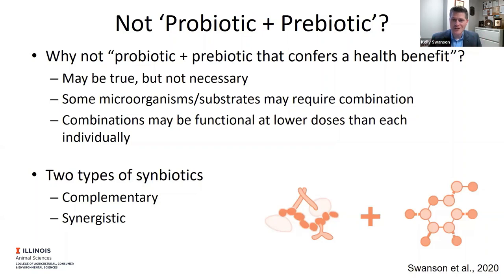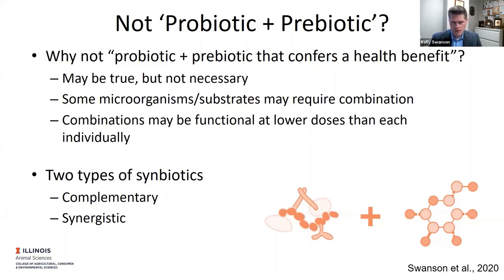Certainly there should be a strategy based on science, not just guessing, but that should leave some room for innovation. Also, there might be some combinations that are functional at a lower dose. It's still very important to prove that the dosage of the combination provides the health benefit, but doses could be different than for a probiotic or prebiotic on its own. So there is some flexibility because we don't just say 'a probiotic and a prebiotic.' There are really two types of symbiotics: complementary and synergistic.